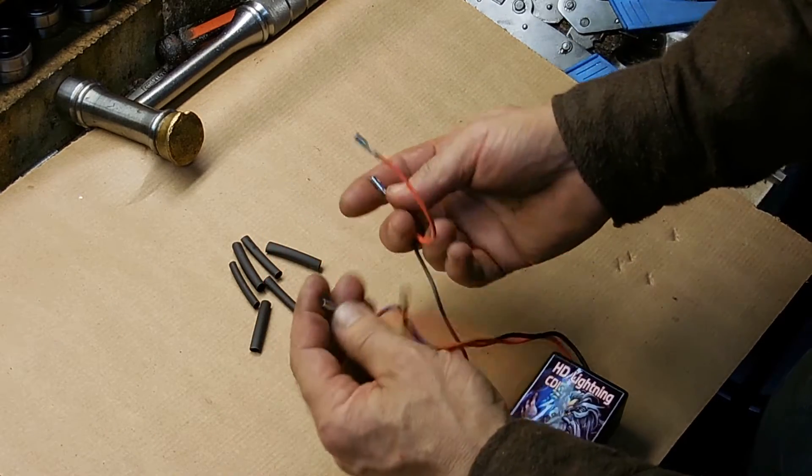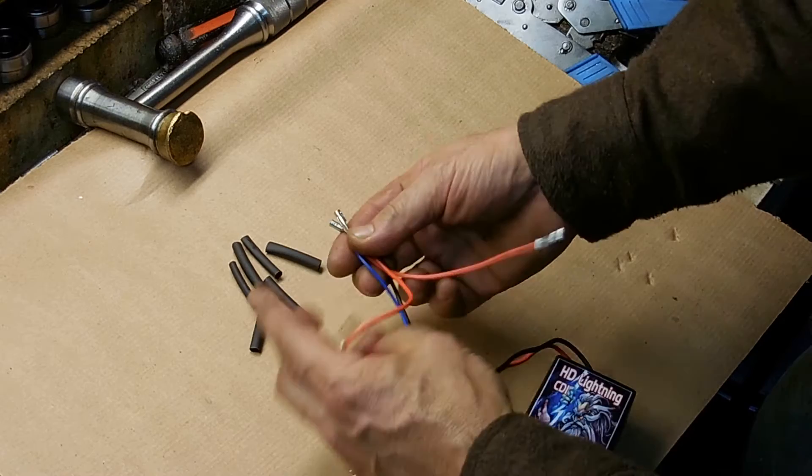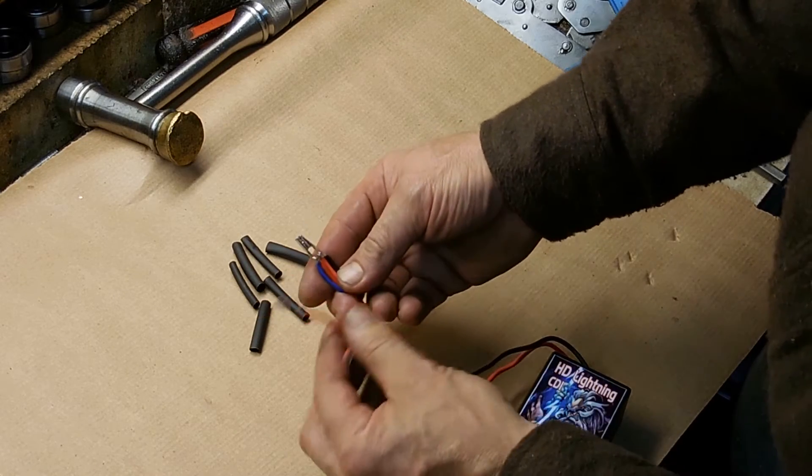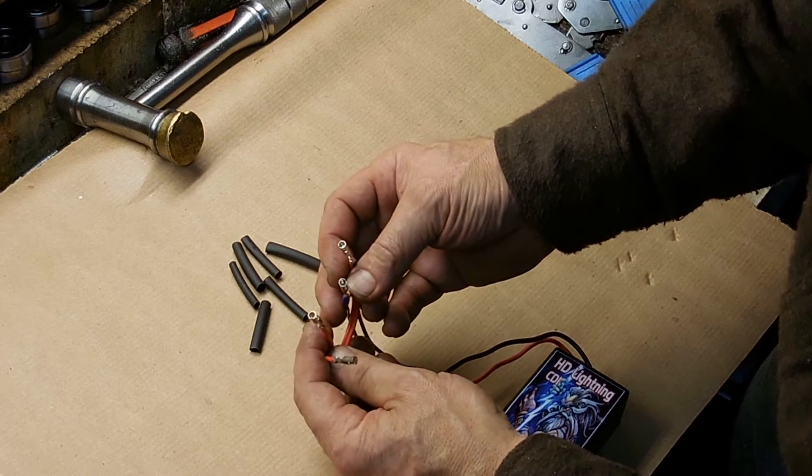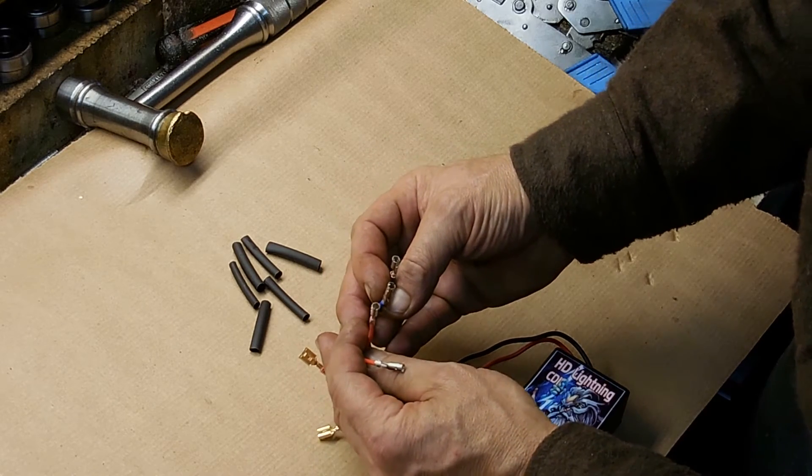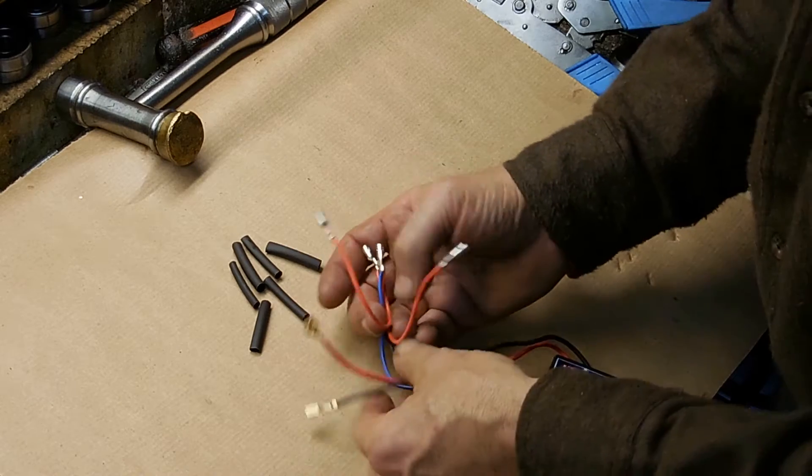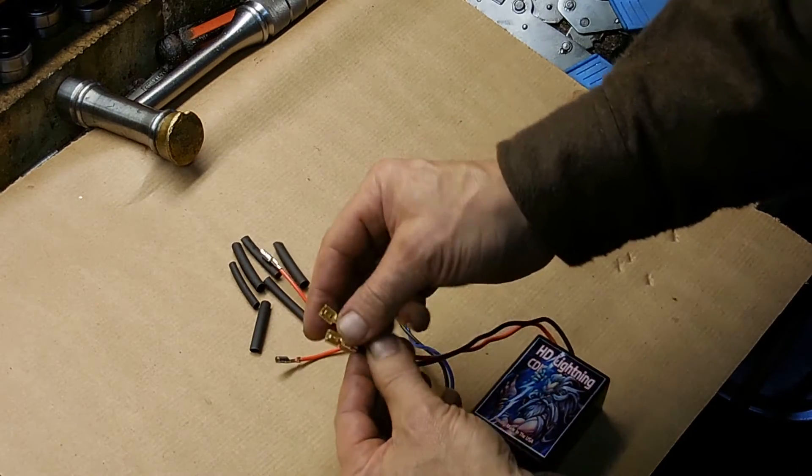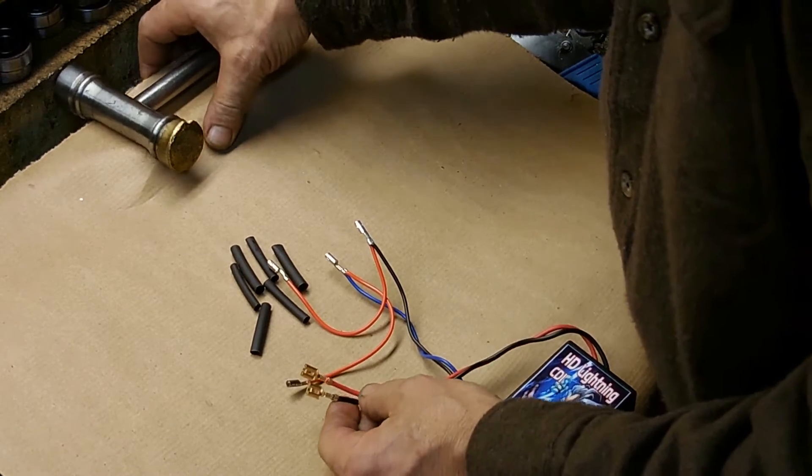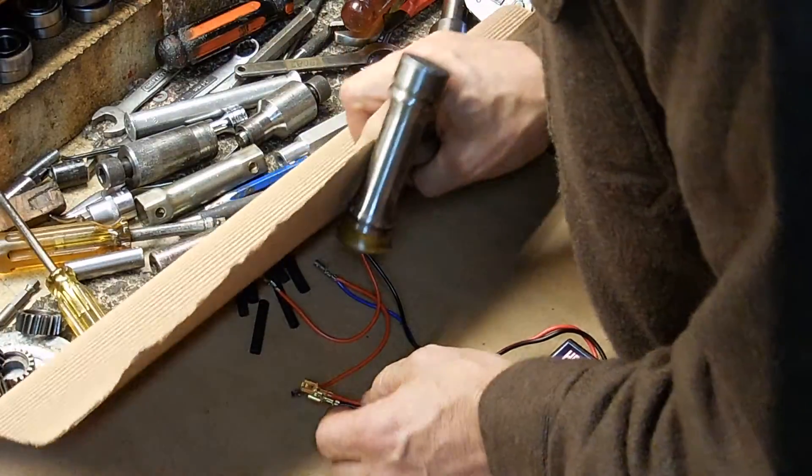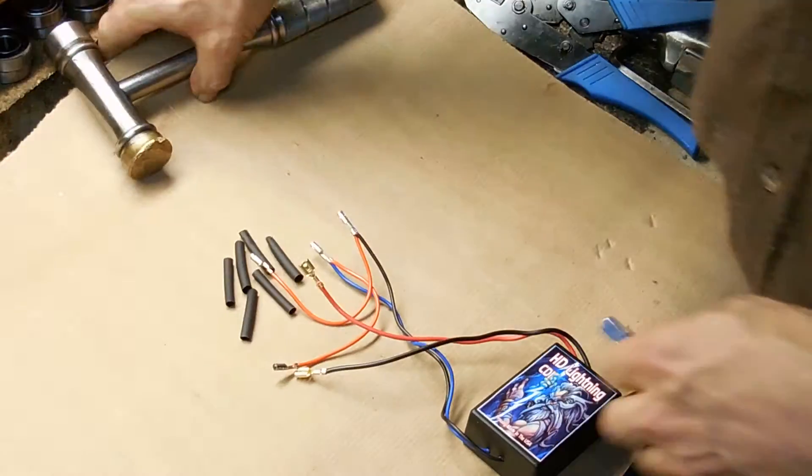Okay, all the connectors. In this case with the kill switch option, there's four female bullet connectors. I believe they're four millimeter. And then these are the spade connectors. These are a little more common. Let me find my little pocket screwdriver.